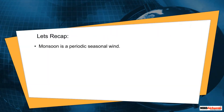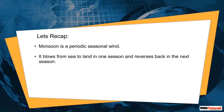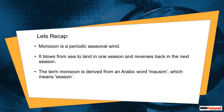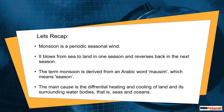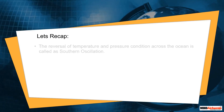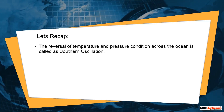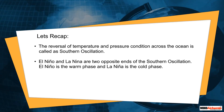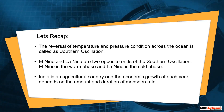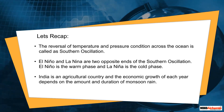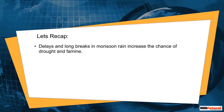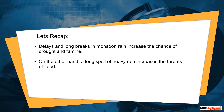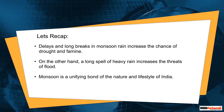Let's recap. Monsoon is a periodic seasonal wind that blows from sea to land in one season and reverses back in the next. The term is derived from the Arabic word 'mossim', meaning season. The main cause is differential heating and cooling of land and surrounding water bodies. The reversal of temperature and pressure conditions across the ocean is called the Southern Oscillation. El Niño is the warm phase and La Niña is the cold phase of this cycle. India is an agricultural country and economic growth depends on the amount and duration of monsoon rain. Delays increase chances of drought, while heavy rain increases threats of flood. Monsoon is a unifying bond of the nature and lifestyle of India.